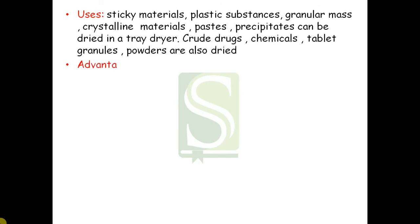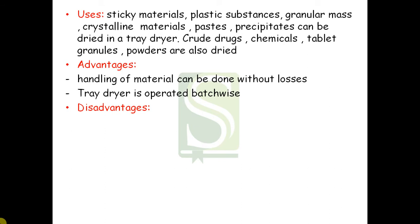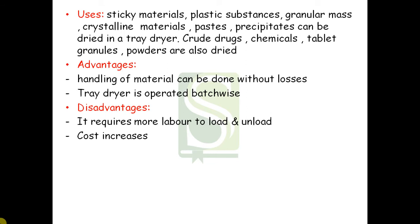The uses: sticky materials, plastic substances, granular mass, crystalline material, precipitates, and pastes can be dried in a tray dryer. Crude drugs, chemicals, powders, tablets, granules, or parts of equipment are dried. The advantage is that handling, loading, and unloading can be done without losses. Tray dryer is operated batch-wise and batch drying is used extensively in pharmaceutical manufacturing. The disadvantage is that it requires more labor to load and unload, increasing cost, and the process is very time-consuming. A variant available is the tunnel dryer.